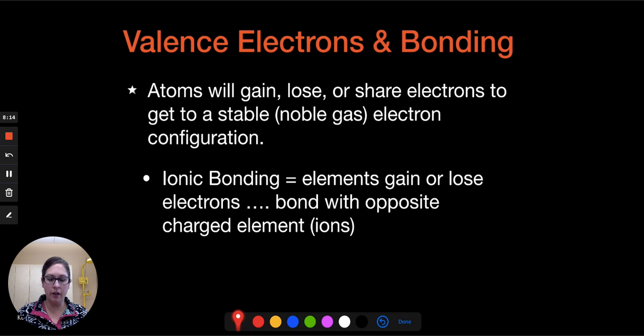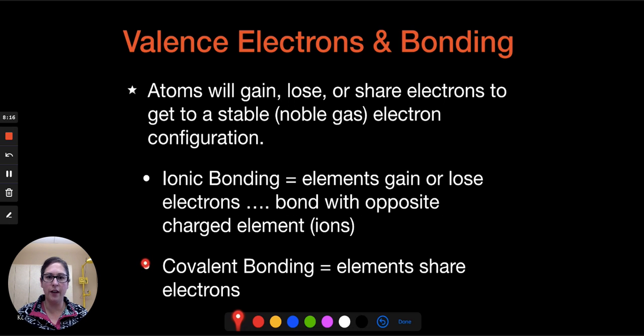On the contrary with that, covalent bonding is where elements are going to share those valence electrons. Now, both of these methods are achieving that stable electron configuration, similar to a noble gas. So we call them isoelectronic, the same as a noble gas when they go about their business for bonding. I hope this is helpful for you for understanding valence electrons, and we'll continue to explore these as we do more with bonding. Bye.